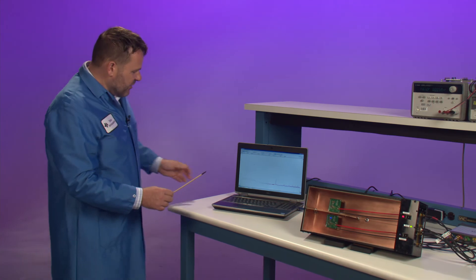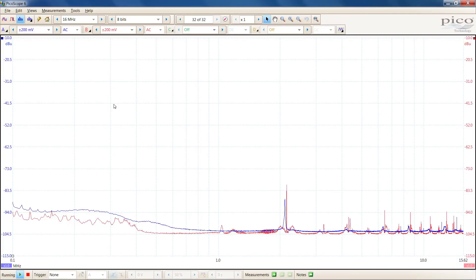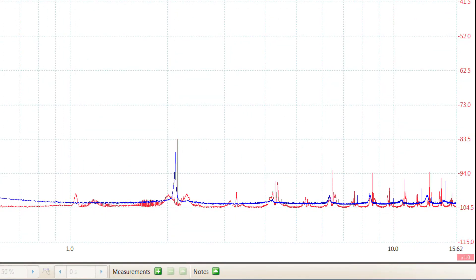What you can see on the laptop over here is the two channels. The red channel represents without spread spectrum and the blue channel represents with spread spectrum. And what you can see is the harmonics and the subharmonics when you use spread spectrum are then declined.